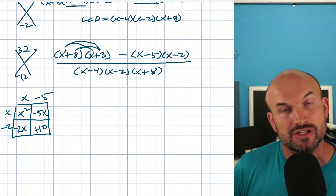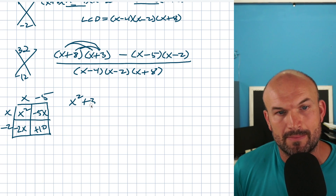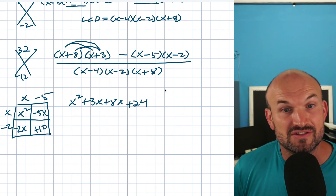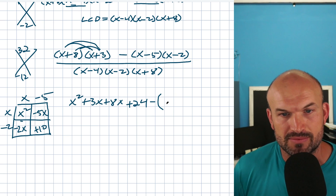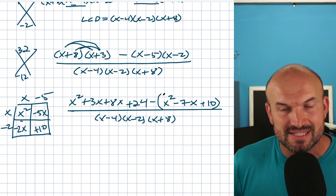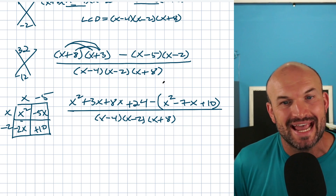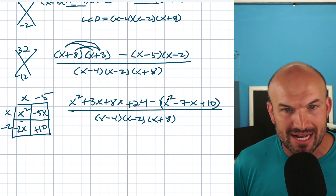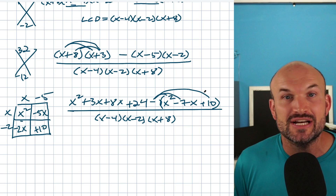Over here I'm just going to use FOIL step by step. x times x is x², x times 3 is positive 3x, x times 8 is positive 8x, and 8 times 3 is positive 24. Now it's very important — I'm going to put parentheses around this product. This is where students make their mistakes: they totally forget to put parentheses around here and end up with just a negative x². No — you are not subtracting the x² alone. You are subtracting the whole expression x² - 7x + 10. So you need to distribute that negative to each and every one of those terms. This is really a negative one times that whole expression.